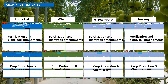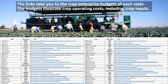The second set of tools are the crop inputs templates. These tools are made up of four side-by-side templates. The top half analyzes fertilization and plant and soil amendments; the bottom half analyzes crop protection and chemicals. There is a high correlation between crop inputs and yields, product quality, and prices received. The effects, side effects, and costs of crop inputs place them high on the list for constant review, questioning, and analysis.